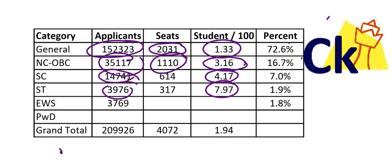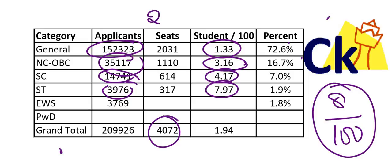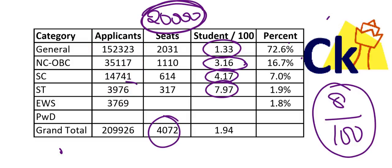Now it might sound scary that only 8 out of 100 will convert, but look at it the other way around. Beyond just the seats, they are going to give a call to almost 20,000 people. Your job is to be in the top 20,000. I made videos earlier for category students — all you need to do is clear the cutoff.